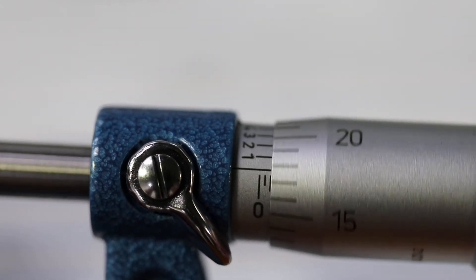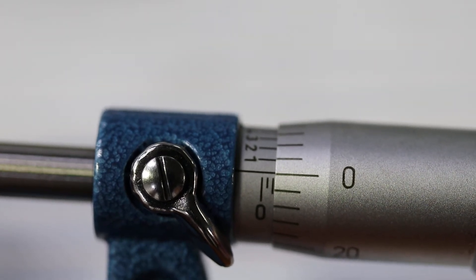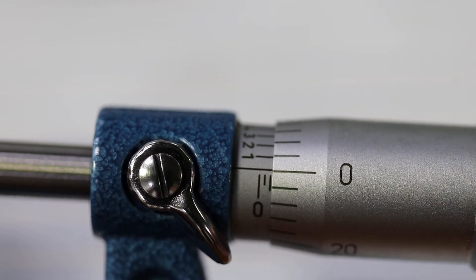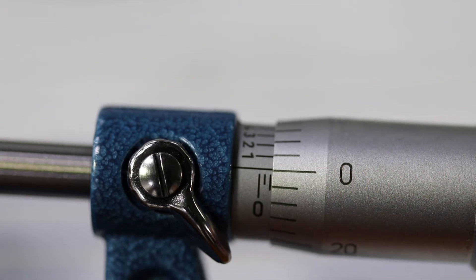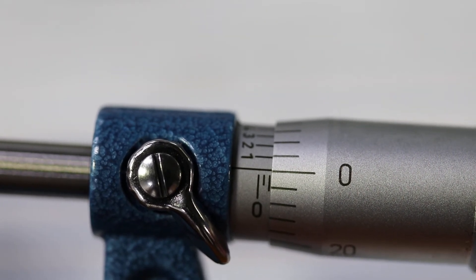If we turn it another full turn, you see the second line there? So now we've got the zero and one, two lines. That would be 50,000, that would be 0.050.